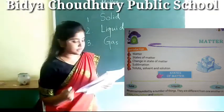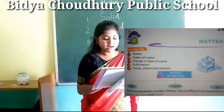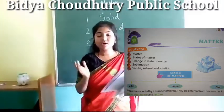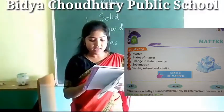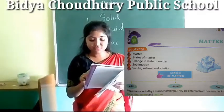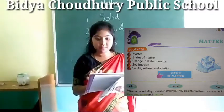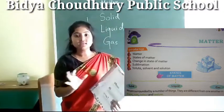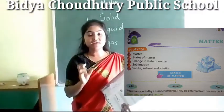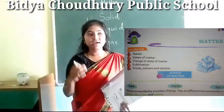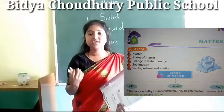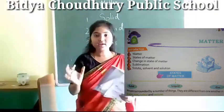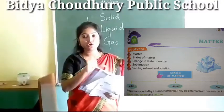Remember this — we are surrounded by a number of things. In our surroundings, a number of things are present. They are different from one another in shape, size, color, and texture. All these materials are different — they are different in shape, size, color, and texture. So all are different; not all are same.